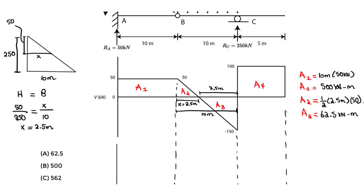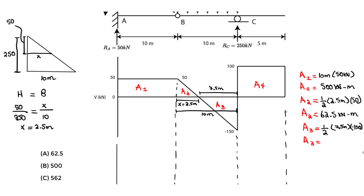Now let's solve for A3. A3 equals one-half base times height. The base is 7.5 meters. The height is negative 150 kilonewtons — you have to be careful here; that triangle goes below zero, so it's negative. Keep the negative sign. A3 equals negative 562.5 kilonewton-meters.